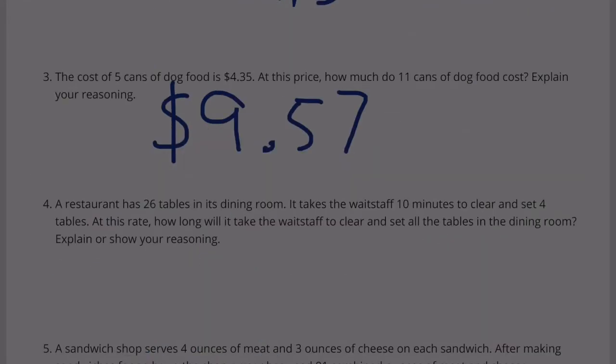Number 4: A restaurant has 26 tables in its dining room. It takes the waitstaff 10 minutes to clear and set 4 tables. At this rate, how long will it take the waitstaff to clear and set all the tables in the dining room? Explain your reasoning.